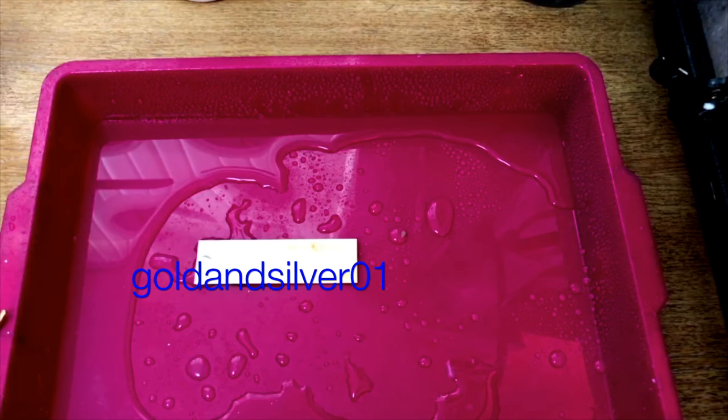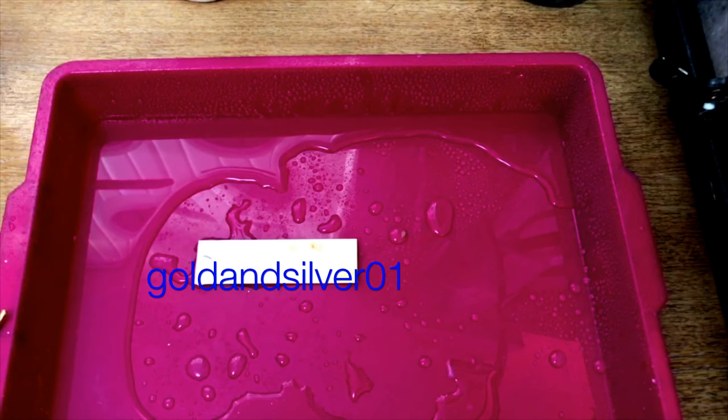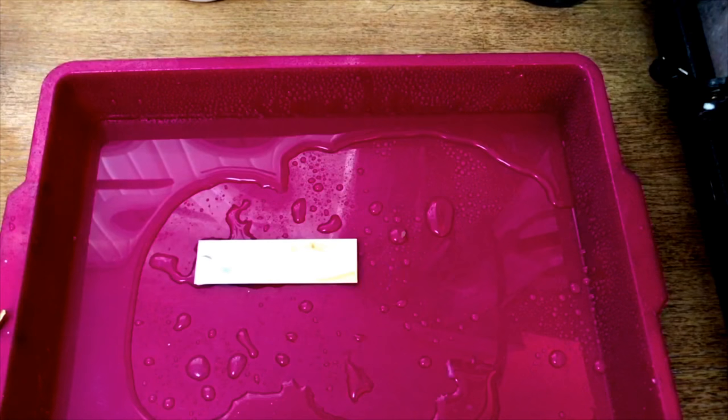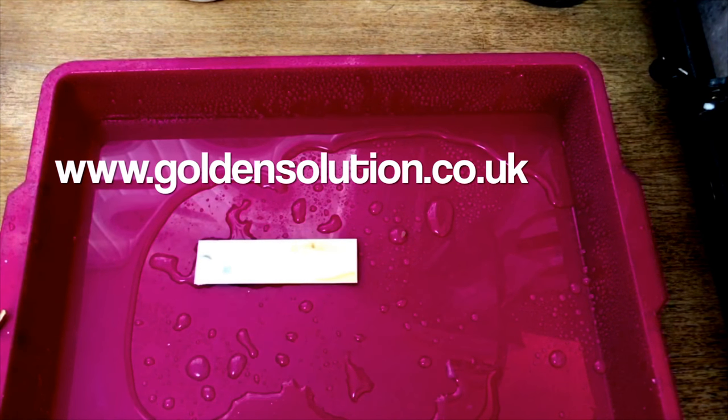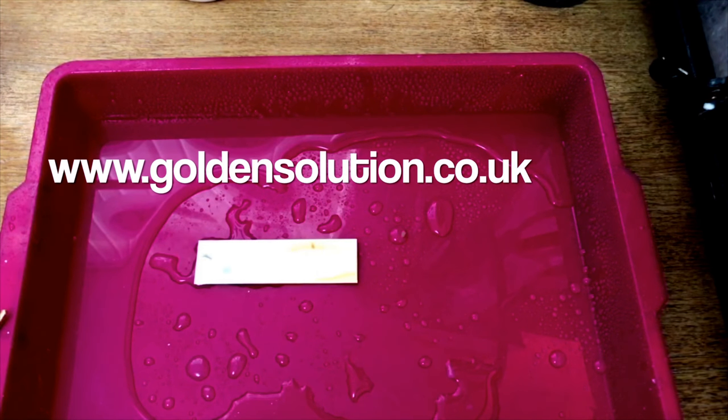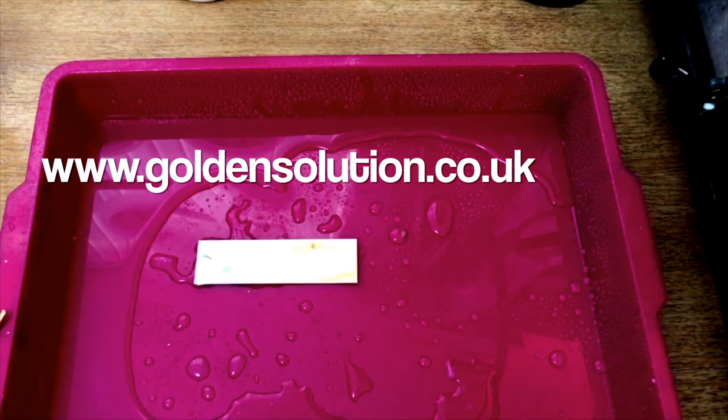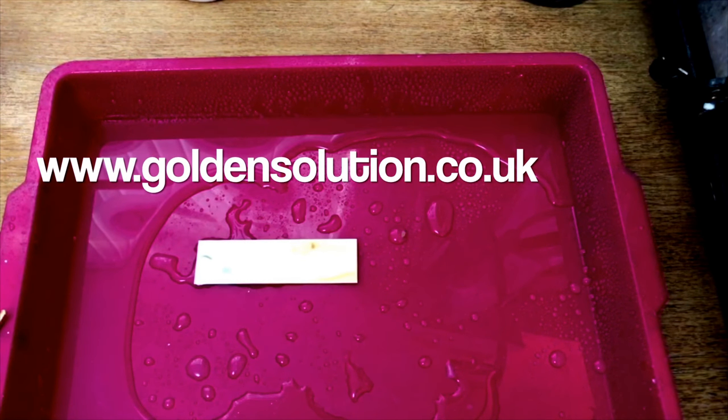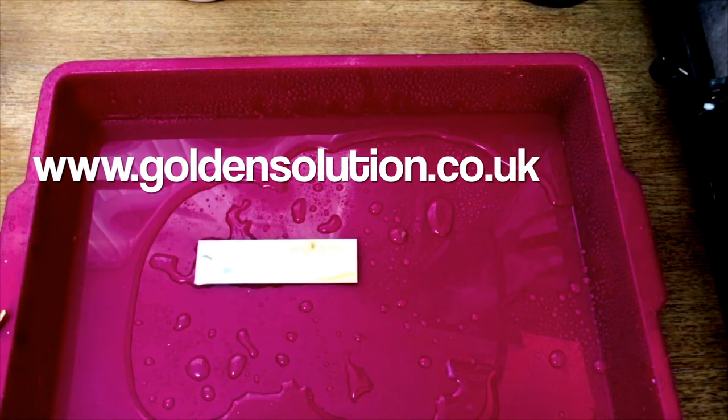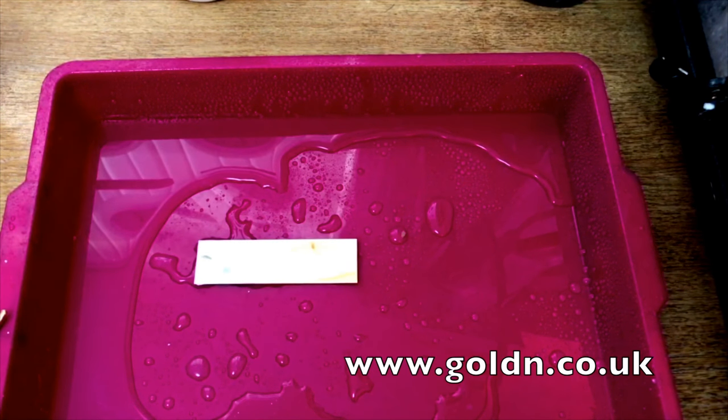You can get all the stuff from my eBay shop, Gold and Silver 01. You can get it from my website, goldensolution.co.uk. There's no S on the end, Golden Solution or Spa Plating. The thickener I don't sell on eBay or anywhere, on Spa Plating website, golden.co.uk. Golden, it's wrongly spelled G-O-L-D-N.